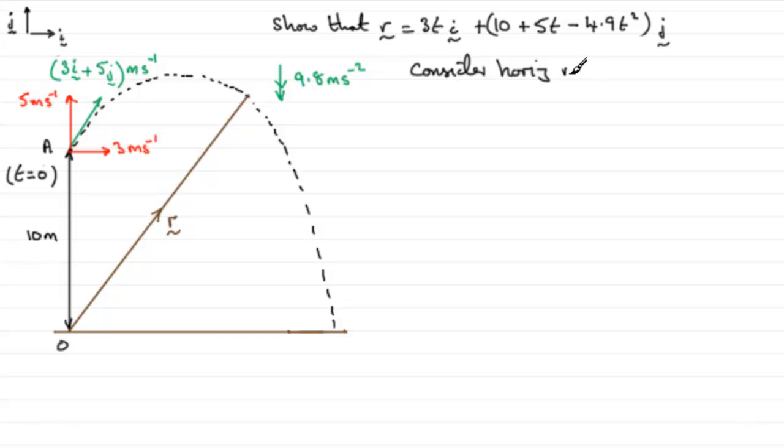we know that it obeys the formula s equals ut because there's no acceleration, s being the distance that it covers. So if it's at this point when time t, then the distance it's covered horizontally to this point,